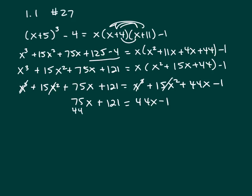So subtract 44x from both sides. And that leaves you 31x plus 121 equals negative 1. And that's 31x equals negative 122. x equals negative 122 over 31.